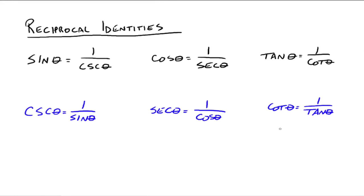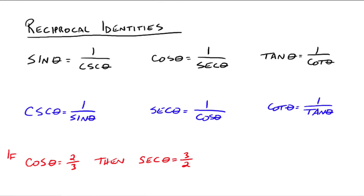You just need to know that sine and cosecant are reciprocals of each other, cosine and secant are reciprocals of each other, and tangent and cotangent are reciprocals of each other. So if we know the cosine of theta is 2 thirds, then the secant of theta has to be 3 halves.